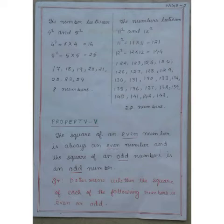Now let us check property 5, which states that the square of an even number is always an even number and the square of an odd number is an odd number. This is very simple.